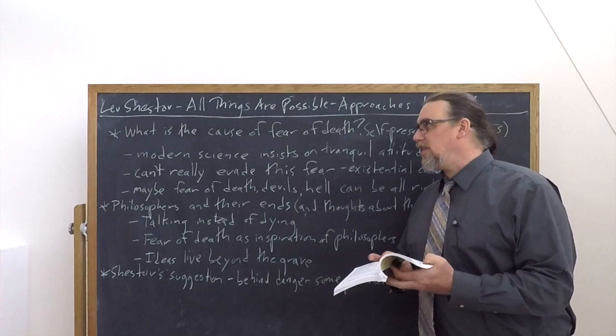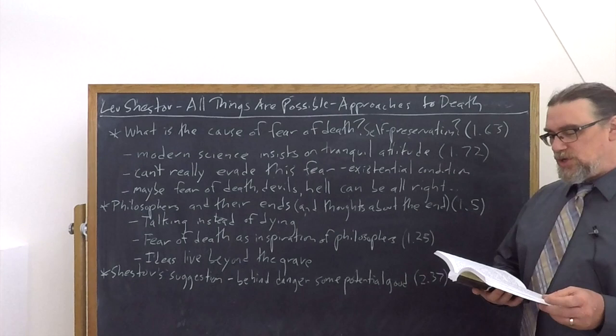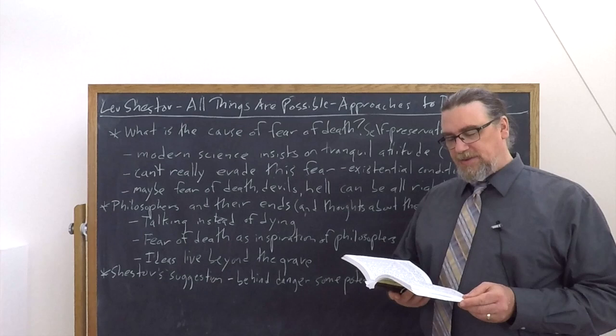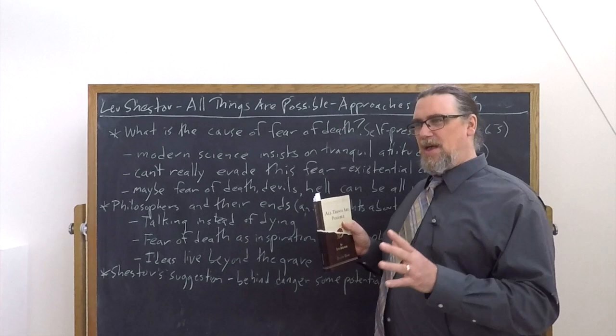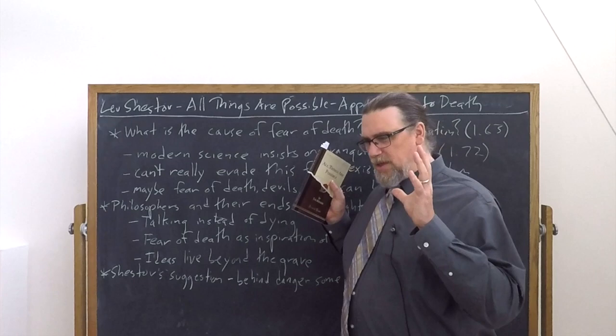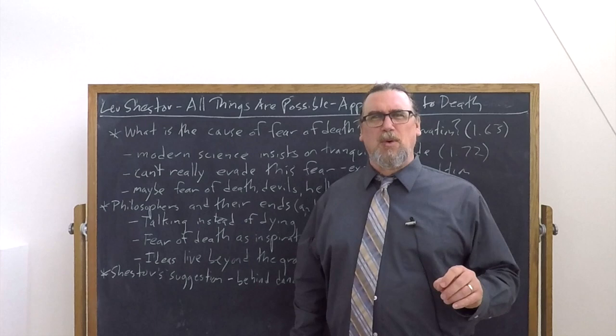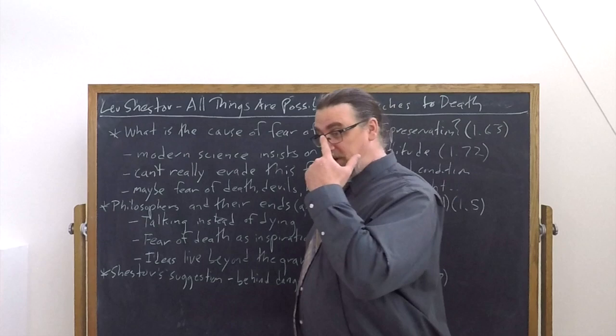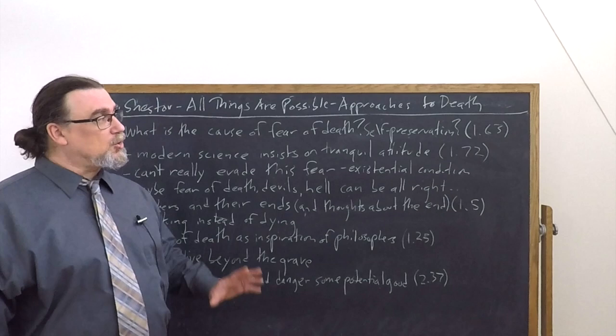In another important passage, he's going to tell us that modern science wants to sort of tranquilize us when it comes to death. He tells us, here we go, this is in chapter 72. He says that modern science forbids men to fear and insists on a tranquil attitude. And we arrive at utilitarianism and the positivist philosophy. Utilitarianism, that doesn't do any good to be worried about death. And the positivist philosophy, don't say anything that isn't purely positive.